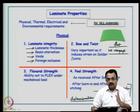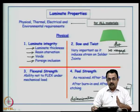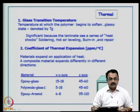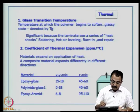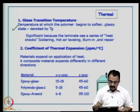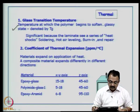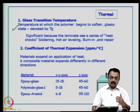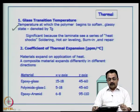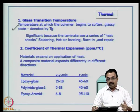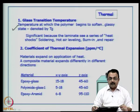The thermal properties of interest are the glass transition temperature Tg — the temperature at which the polymer begins to soften. It is significant because the laminate will see a series of heat shocks during PCB processing: soldering, hot air leveling of solder, burn-in tests for reliability, and repair. Repair can involve manual soldering, which can in fact give more thermal shock compared to machine soldering.